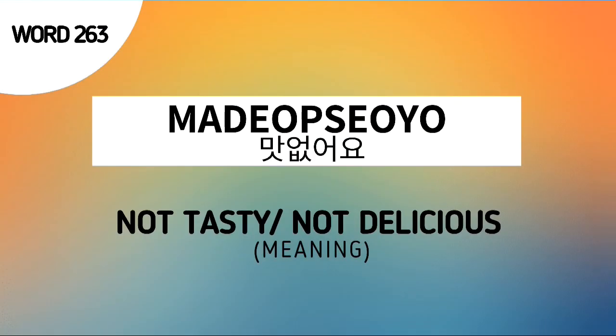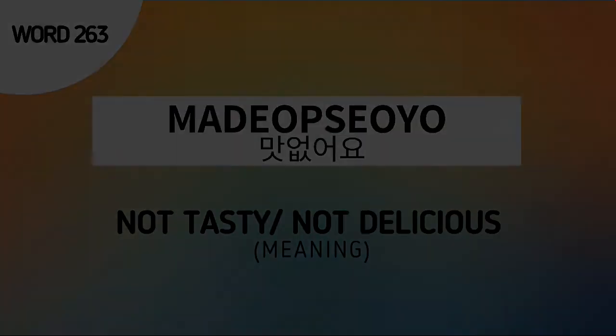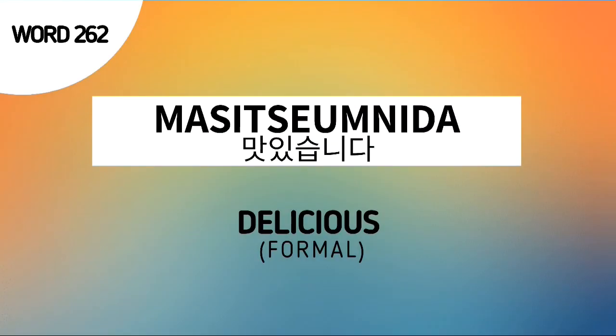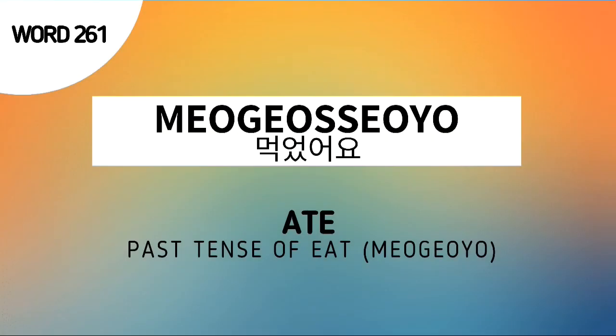Word number 263 is Mateopsoyo, which means not tasty or not delicious. Word number 262 is Masitseumnida, which means delicious in a formal manner. And the last word for our review is word number 261, Meogeotsoyo, which means ate or the past tense of eat.